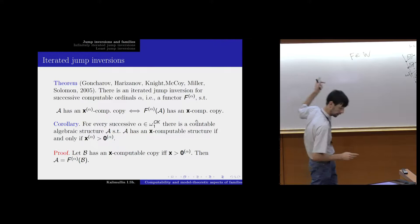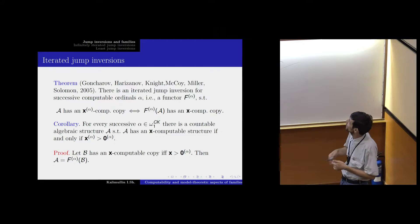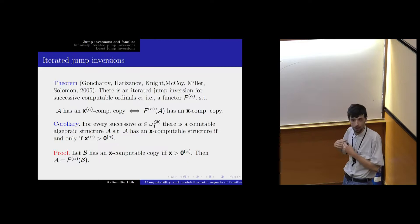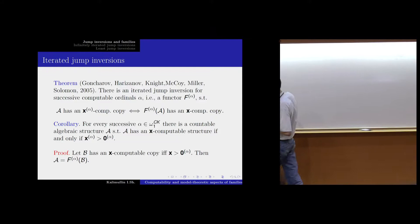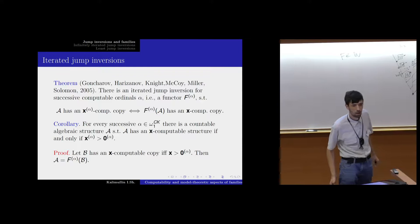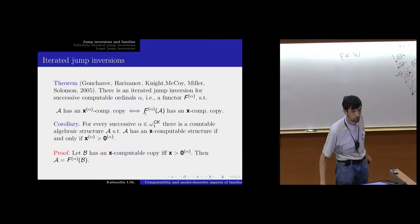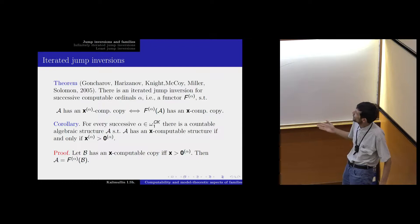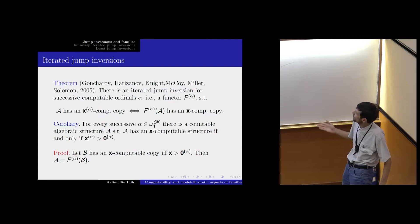I forgot to say: the same jump inversions can be iterated, not even finitely many. It is in the same paper by Goncharov, Khadizanov, Knight, McCoy, Miller, and Solomon. It has the possibility to invert the jump even at infinite levels for all suggestive ordinals. So the immediate corollary is that you can construct structures which are even non-low-alpha for every suggestive alpha.